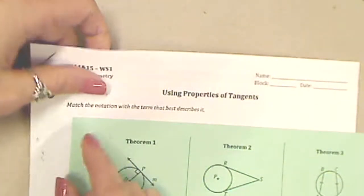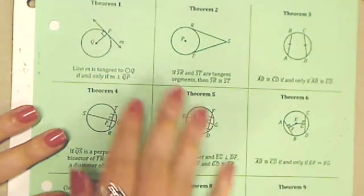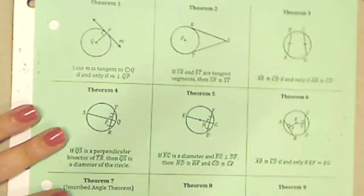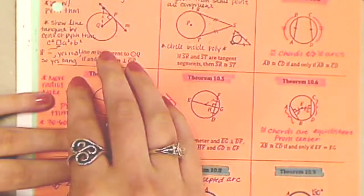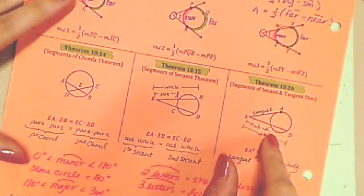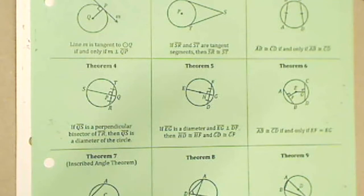On your way in today you should have picked up two things: worksheet number one on using properties of tangents, and the green paper. This unit is on circles, and as you can see there are a lot of circle theorems. We're going to keep track of this sheet the entire time because by the end it's going to be filled in. Each day I'll go through, highlight the new theorems we're using, and give you extra notes you can use while working on assignments in class. It'll be your big study guide for this test.